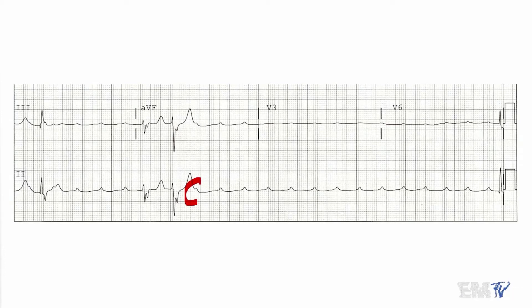The one telltale sign though that makes this definitively a 3rd degree heart block is the fact the P waves are moving. As you can see the P wave is present here right at the end of the T wave of this complex. If I move to the beginning of lead 2, you'll see the P wave is in a different spot altogether. If this were a 2nd degree type II heart block, the P wave location wouldn't change.